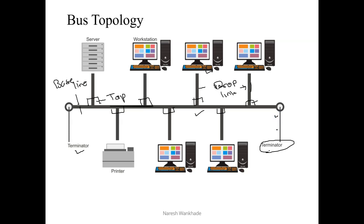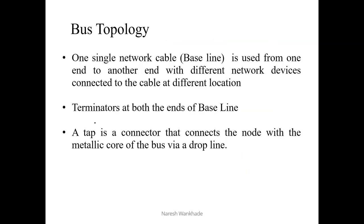Using this drop link and the tap connector, every node can be easily connected to the baseline. This baseline is terminated at both ends with the help of terminators. A node means anything — maybe a server, printer, or any type of peripheral device involved in networking, or any type of workstation that is part of the network. The tap, which connects the node to the baseline, is basically a metal connector, and the drop link runs between that tap and the node.